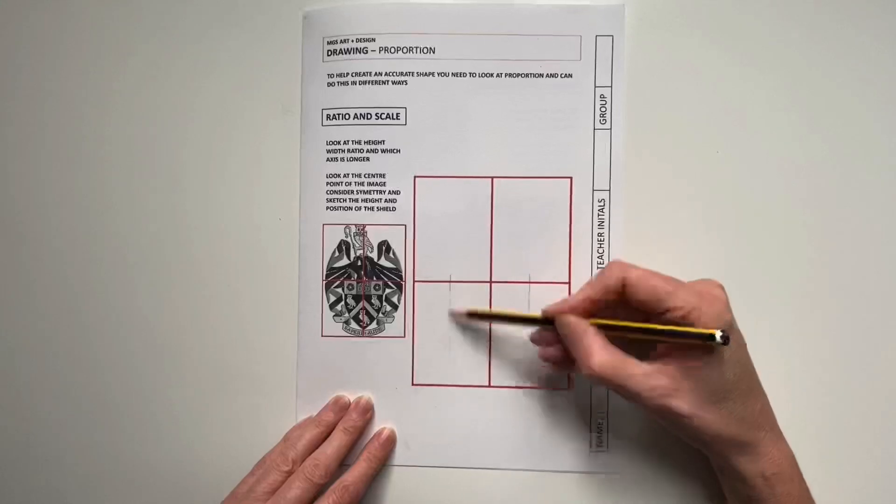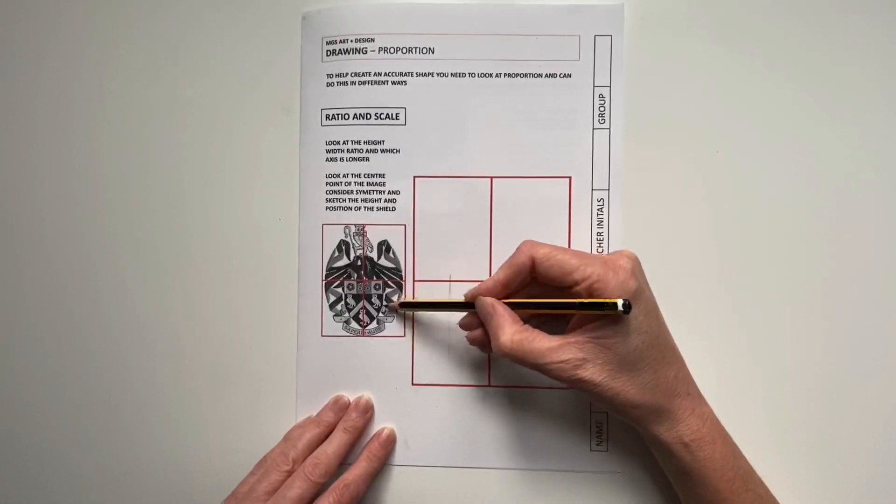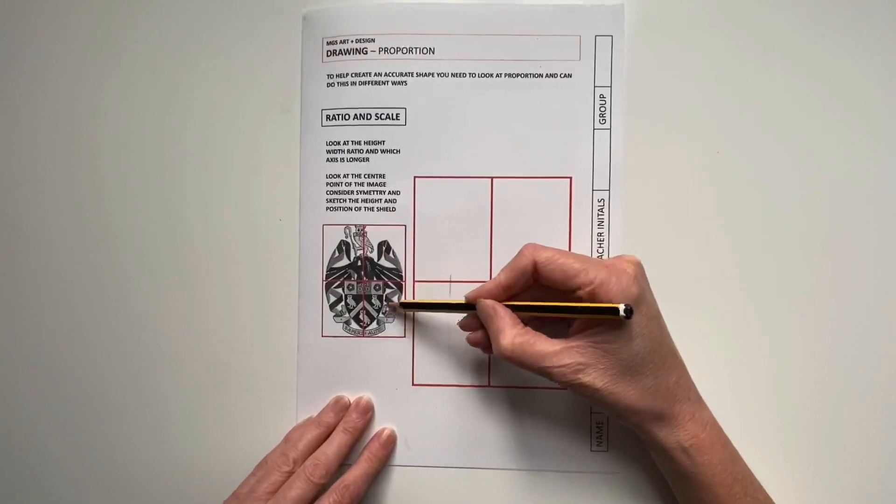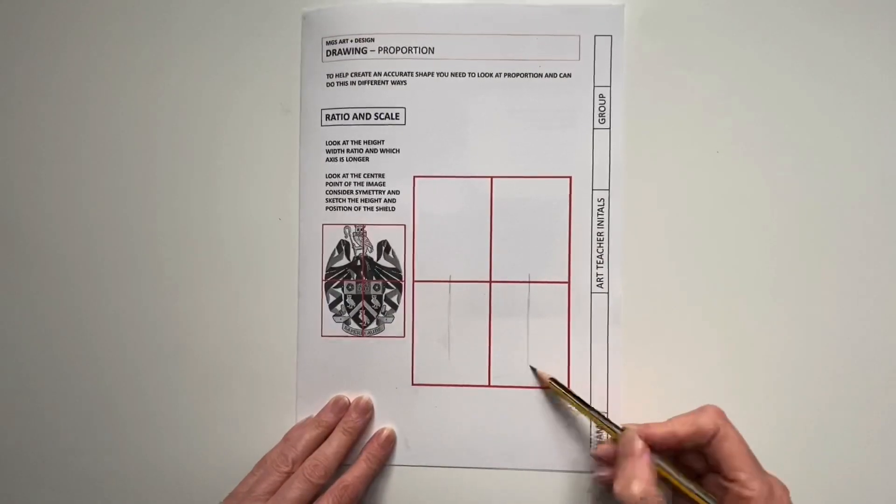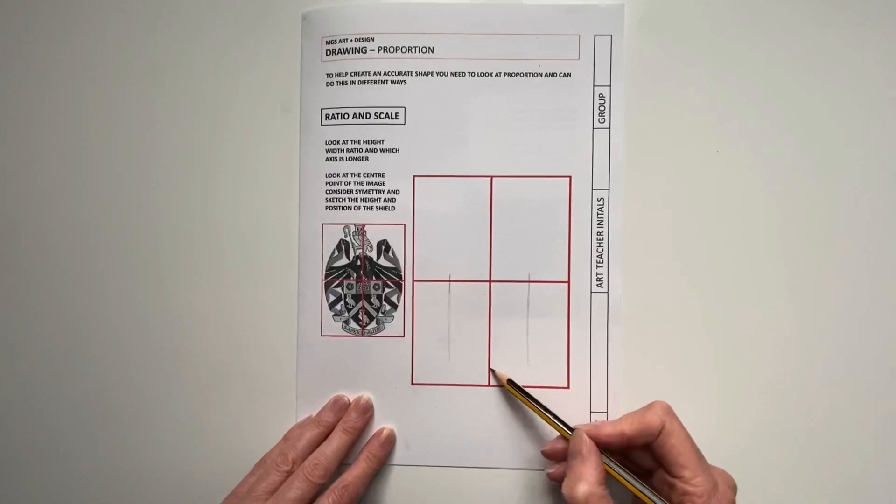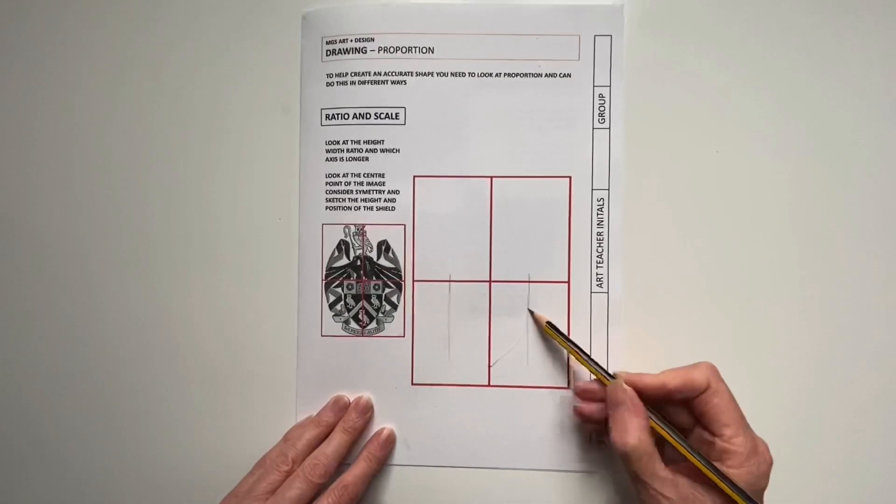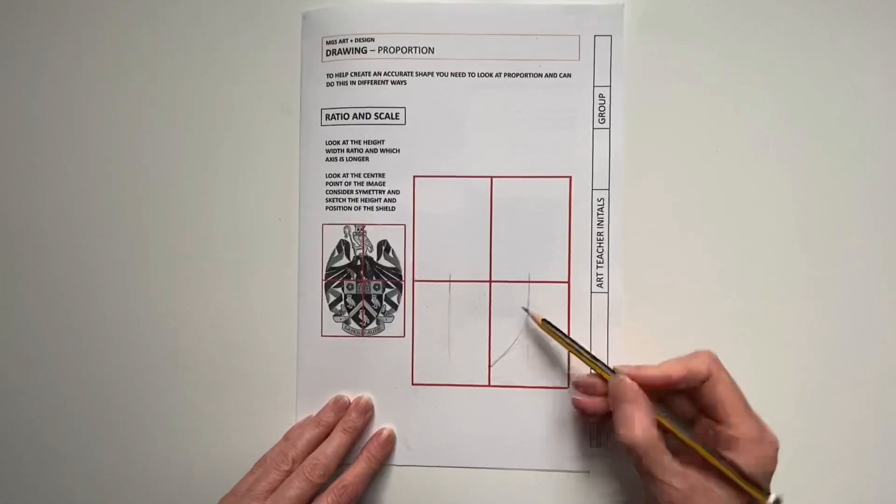You can see at that point, maybe about halfway down that box, it starts to curve in. And it doesn't come to the bottom because the banner, the separate badge, is at the bottom. So if I describe it at the point about there and I construct the line, you see this is an exercise in construction.